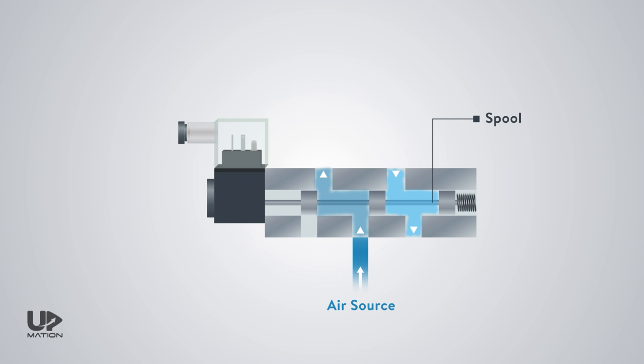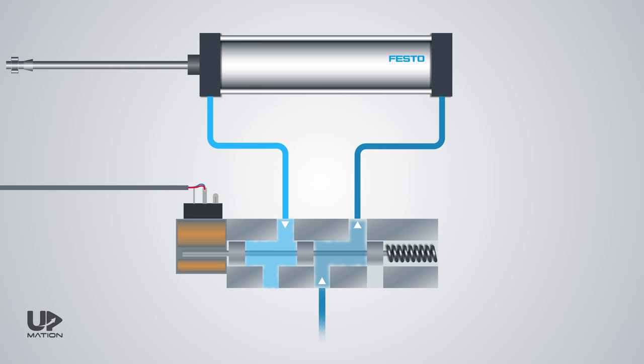The component that causes the spool to move within the housing is an electric solenoid. This is the neutral or rest position of the spool. As you may be familiar with solenoids, when it gets energized by a command from the PLC, the coil will push the spool and thus it will squeeze the spring on the other side.